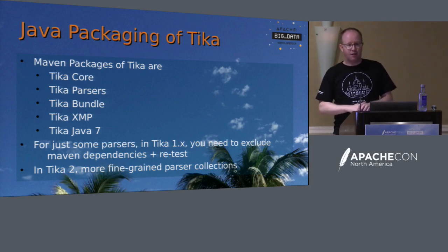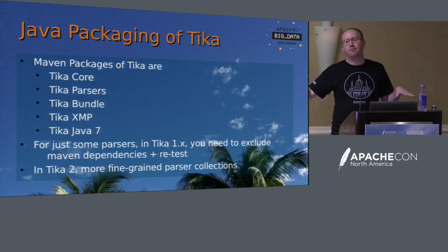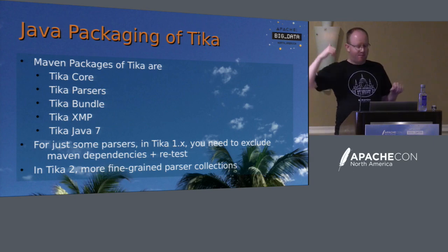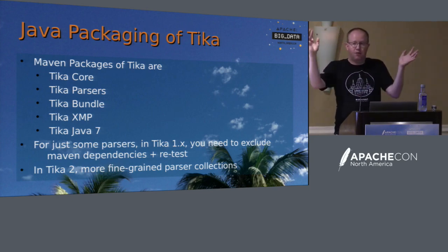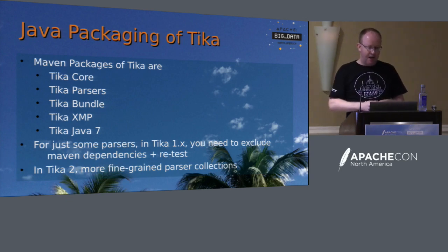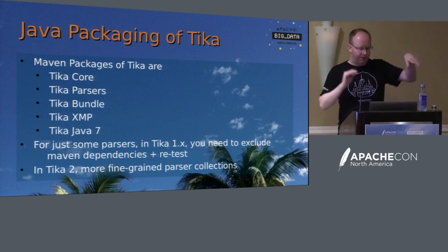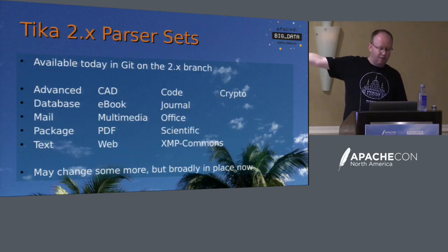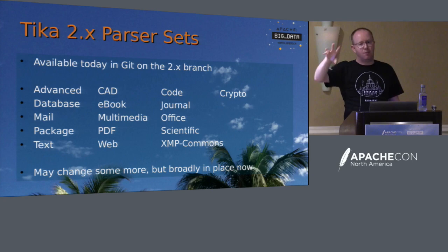The big one that a lot of people have been asking for is packaging of the parsers. At the moment with Tika, you get no parsers or 60 megabytes' worth of parsers. In the new version we have much more modular parsers where you have a group of parsers for one logical area and you can say: I still want all the parsers, or I'm only dealing with text formats, just give me the simple set. It means you can just say 'tika-parser-pdf' — that's all I want, rather than having to exclude complicated dependencies.